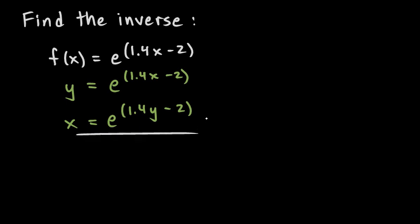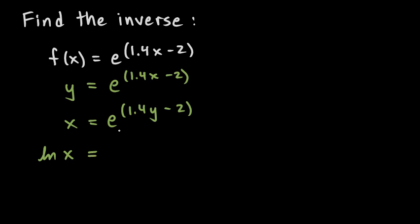Then we need to take this equation and algebraically solve for y. When we do, the result will be the inverse of the original function. To solve for y, we need to first get rid of the base-e exponent. We get rid of a base-e exponent with a base-e logarithm — a base-e log is just a natural log. So we take the natural log of each side. On the left, we get ln(x). On the right, the natural log of e to something simply gives us that something, since a natural log cancels a base-e exponent. So the right side becomes 1.4y minus 2.